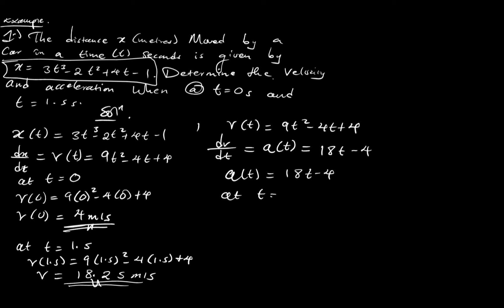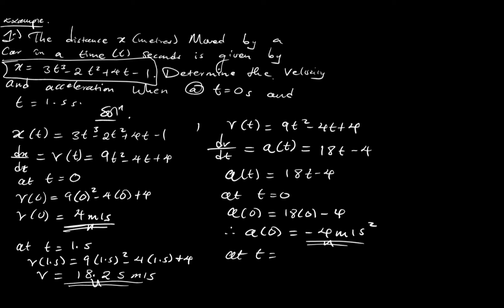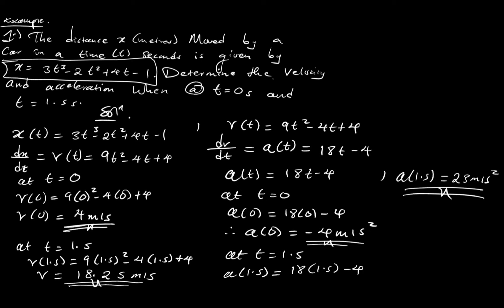At t = 0, acceleration a(0) = 18(0) - 4 = -4 meters per second squared, which represents a reduction. At t = 1.5 seconds, a(1.5) = 18(1.5) - 4 = 23 meters per second squared. This is how we solve problems involving one quantity depending on another using the concept of rates of change in the application of differentiation.